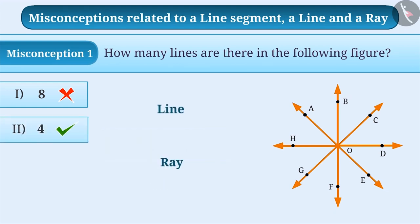To find out the correct answer, it is necessary to understand the difference between a ray and a line. A line neither has a starting point nor an ending point. That means, it extends to infinity on both sides.